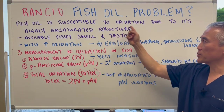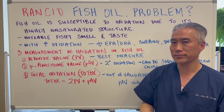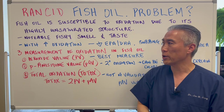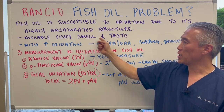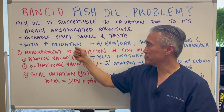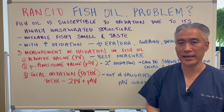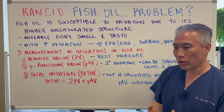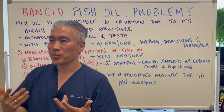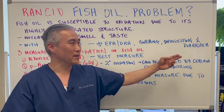Fish oil is susceptible to oxidation due to its highly unsaturated structure. When you have a lot of oxidation of the fish oil, you're going to get a fishy smell and taste. With increased oxidation, you'll have a decrease in the active ingredient, which is EPA and DHA. Also with oxidation, if you ingest it, you'll have indigestion, burping, and diarrhea.